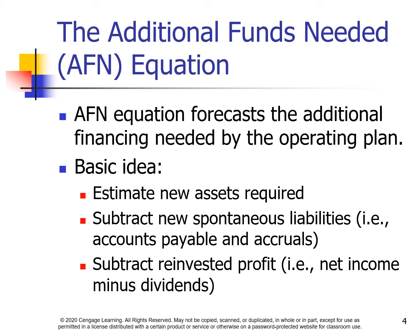The Additional Funds Needed, or AFN, Equation is used to forecast the additional financing needed by the operating plan. The basic idea is: estimate new assets required, subtract new spontaneous liabilities — for example, accounts payable and accruals — and subtract reinvested profit — for example, net income minus dividends.